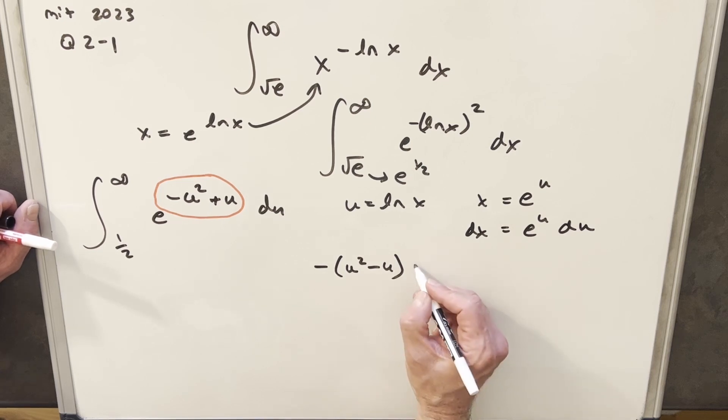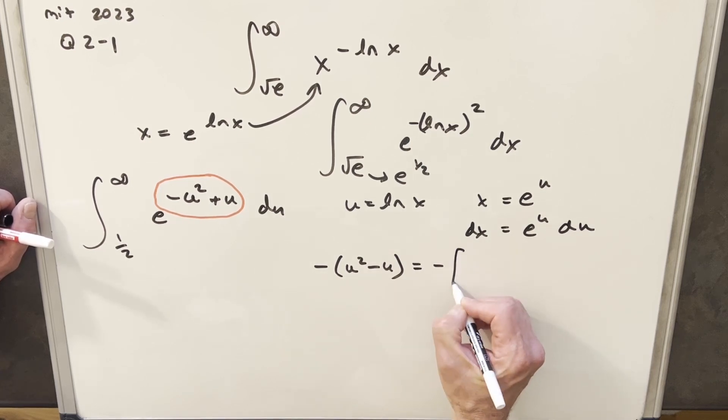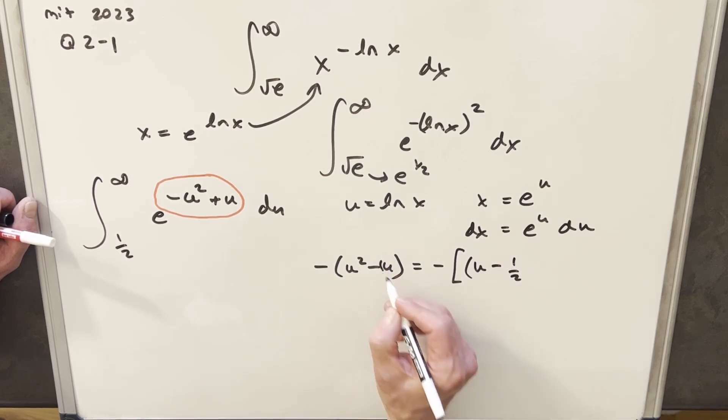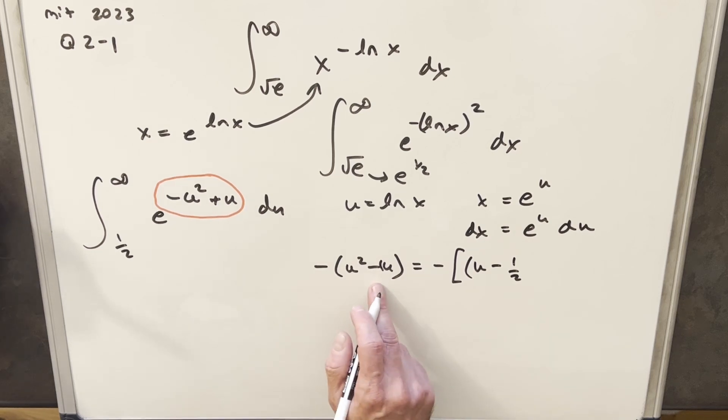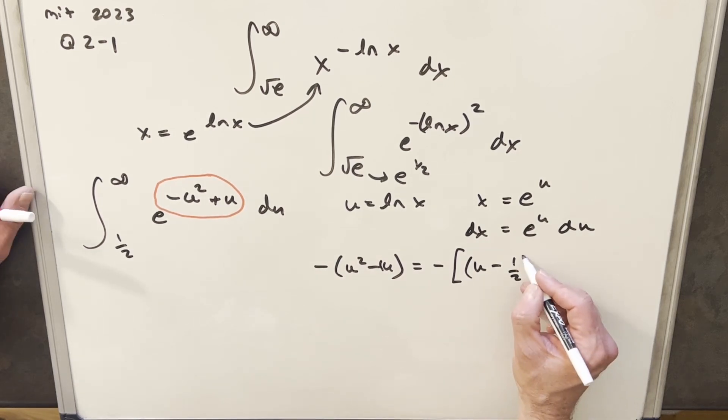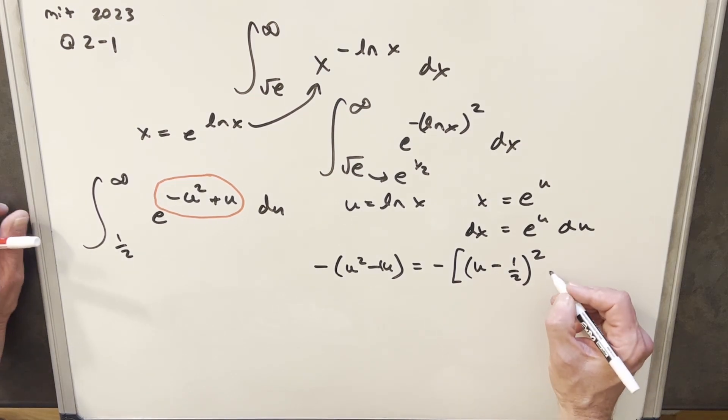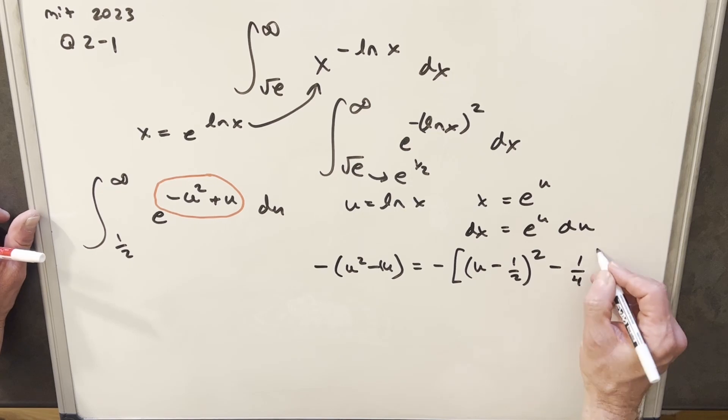And then, well, what this thing I'm going to do is we're just going to complete this square. So we'll keep our minus sign there. I'll write this as u minus 1 half. Just noticing, if there's a 1 there, taking a half of that, dividing by 2, we get our minus 1 half. Now when we square this out, we get u squared minus u plus 1 fourth. We don't want to change it, so I'm just going to subtract 1 fourth here.